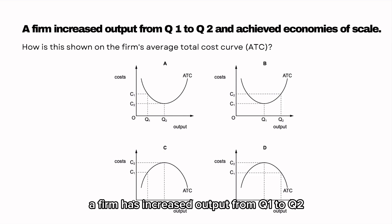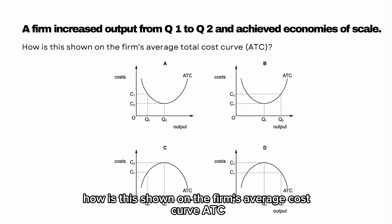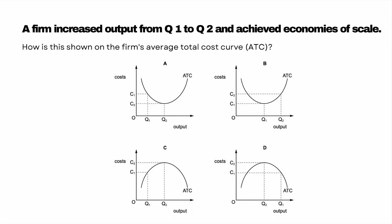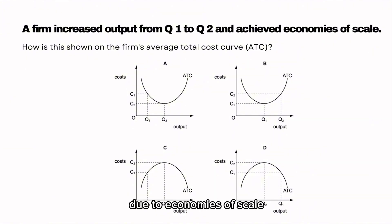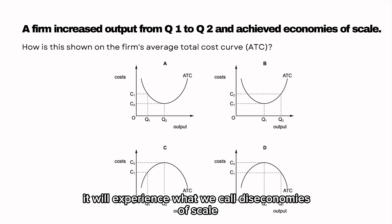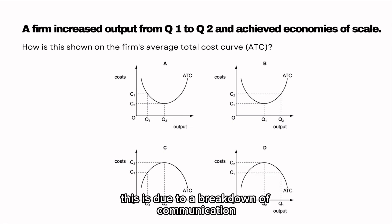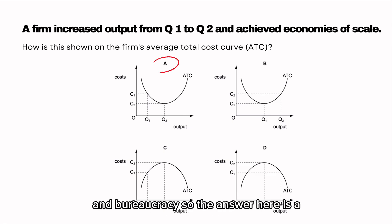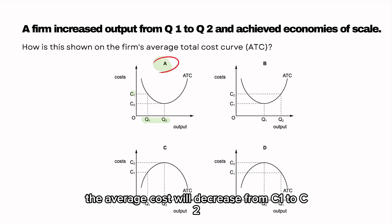A firm has increased output from Q1 to Q2 and achieved economies of scale. How is this shown on the firm's average cost curve ATC? As firms grow in size, average total cost will decrease due to economies of scale, such as managerial, financial, and technical economies. But if the firm grows too large, it will experience diseconomies of scale due to a breakdown of communication and bureaucracy. The answer is A — as output increases from Q1 to Q2, average cost decreases from C1 to C2.